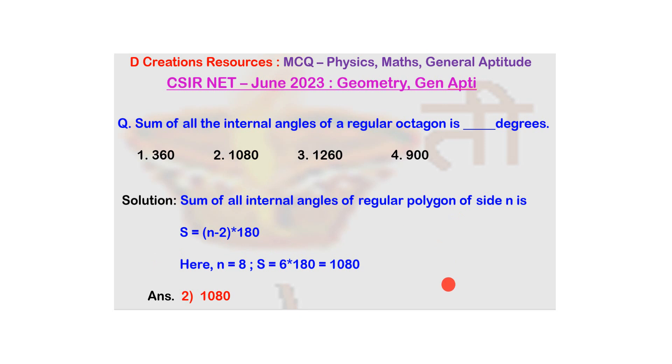Similarly, let's consider a square. For square N is 4. So, the sum will be 4 minus 2 into 180. That is 180 into 2. That is 360. Now, this also we know is true.